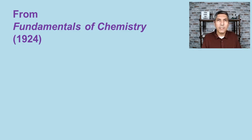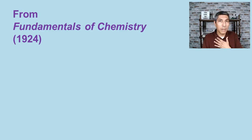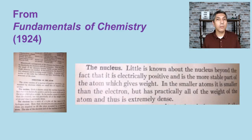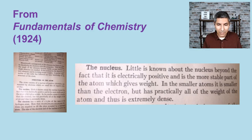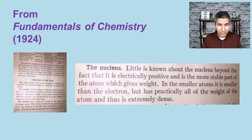It's interesting to reflect on how little was understood about the nucleus just a century ago. In a chemistry textbook called Fundamentals of Chemistry, published in 1924, the entire discussion of the nucleus reads: 'Little is known about the nucleus beyond the fact that it is electrically positive and is the more stable part of the atom which gives weight. In the smaller atoms it is smaller than the electron but has practically all of the weight of the atom, and thus is extremely dense.' Just two sentences — showing how far we've progressed.